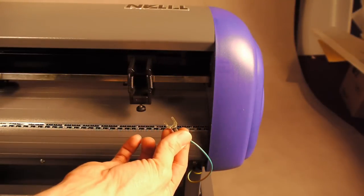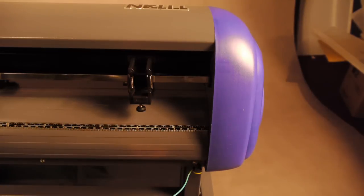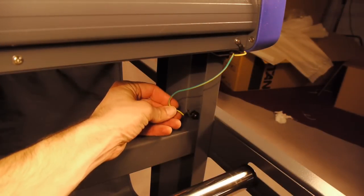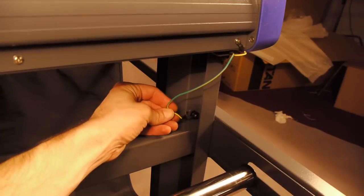On the back of the cutter you'll find a bonding wire, which attaches to a bolt on the stand leg. This wire is designed to help reduce static electrical interference during longer cuts.